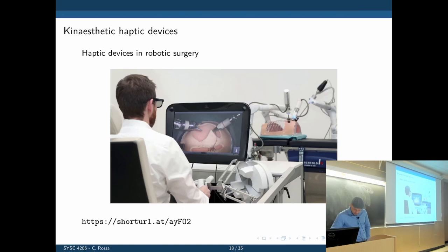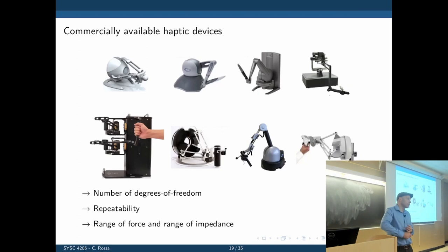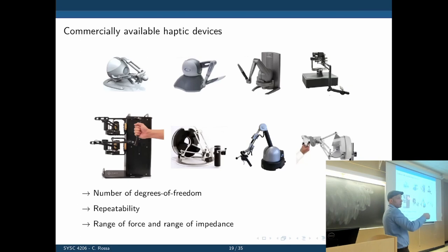Here are a few haptic devices available in the market, ranging from $300 to $150,000 per device. What makes them expensive? The number of degrees of freedom and the impedance range they can provide. Ideally there are two extreme scenarios: one where you hold it but don't even feel the inertia — it's like operating in free space — and the other extreme where you touch something quite rigid and it should prevent you from moving into it.